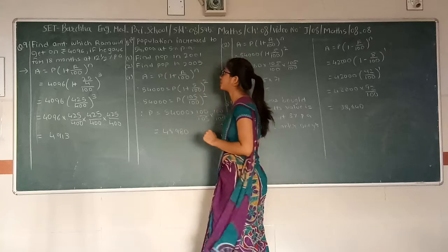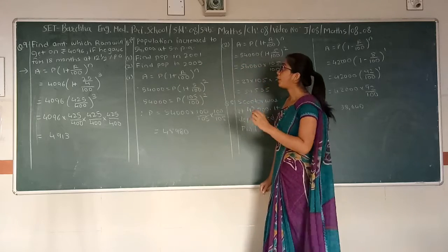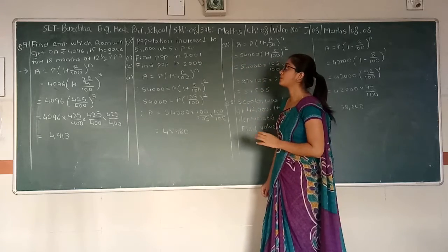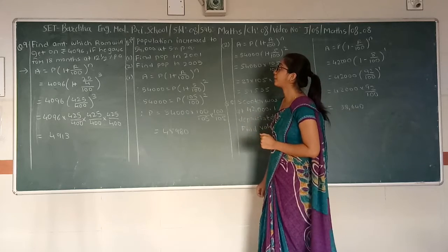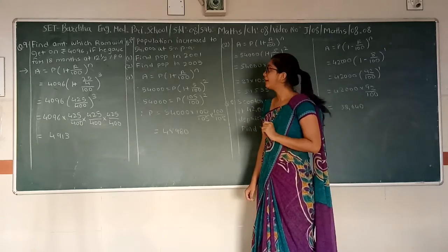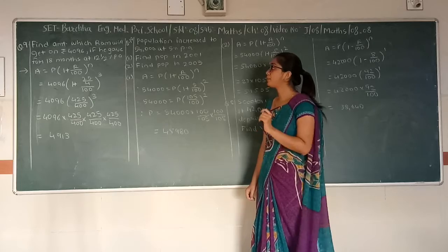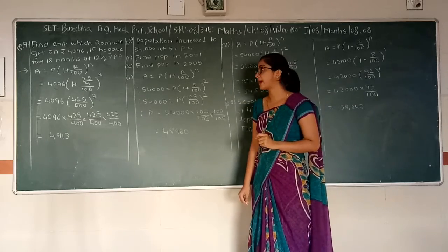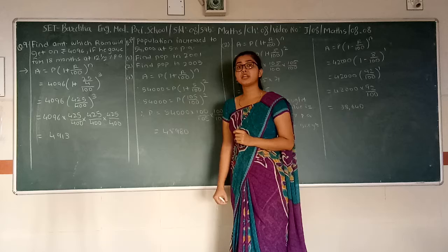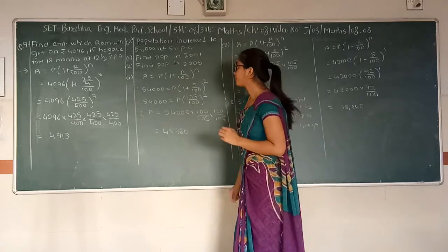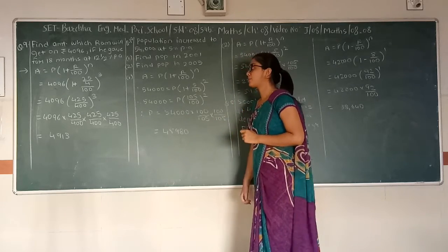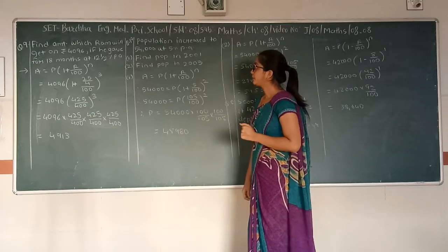Now question number 10. The population increased to 54,000 at 5% per annum. We need to find the population in 2001 and find the population in 2005. First of all we will find out the population in 2001. A is equal to P into bracket 1 plus R upon 100 raise to N.